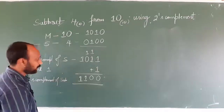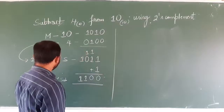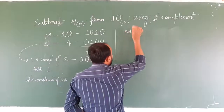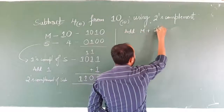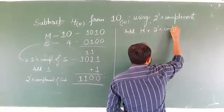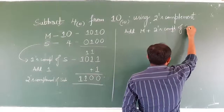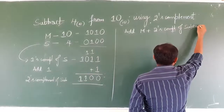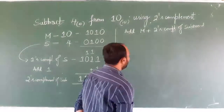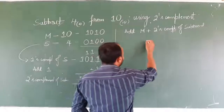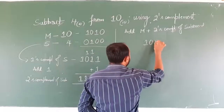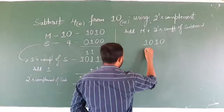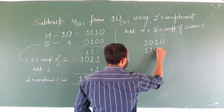This is the two's complement of the subtrahend. Now we need to add minuend plus two's complement of the subtrahend. The minuend value is 1010. The two's complement of the subtrahend is 1100.